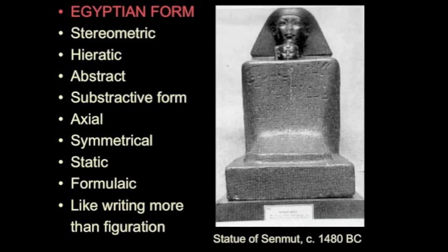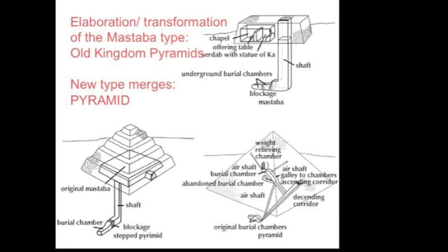Another word I'd like to stress is hieratic, which simply means more about a kind of ritual purpose — a formalized cipher made visible rather than a realistic representation of people. We also talked about the obsession with funerary architecture in Egypt, the idea of making monuments that last for eternity, having to do with the cult of the dead and the idea of the afterlife. One has to have a body for the afterlife — hence mummification, hence even sculpture.